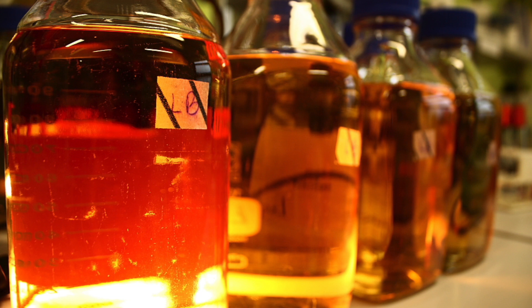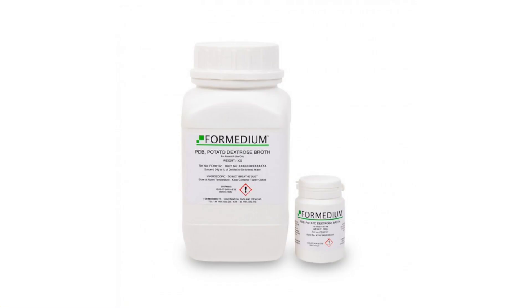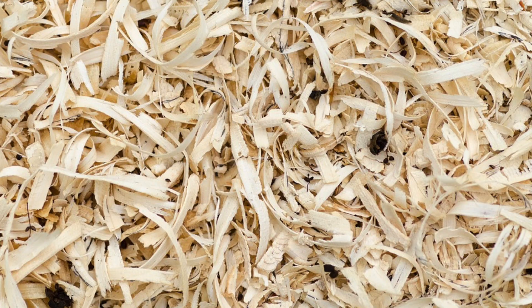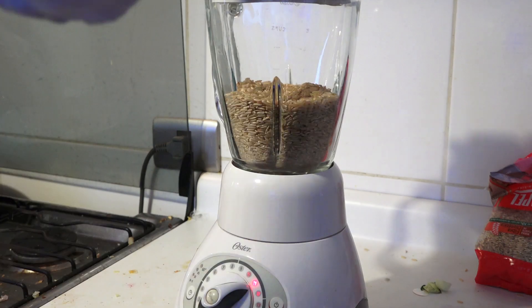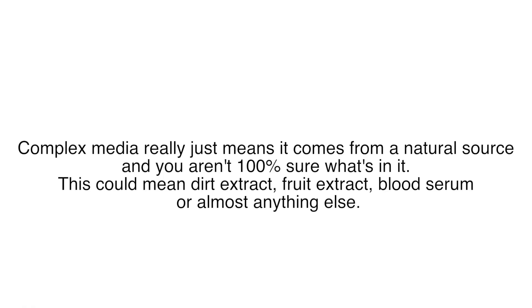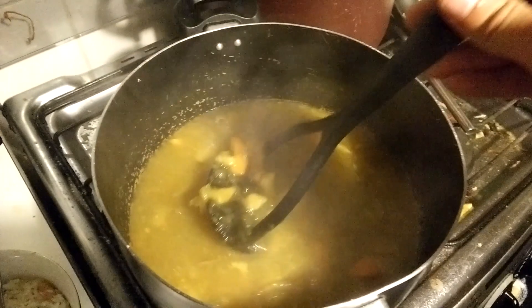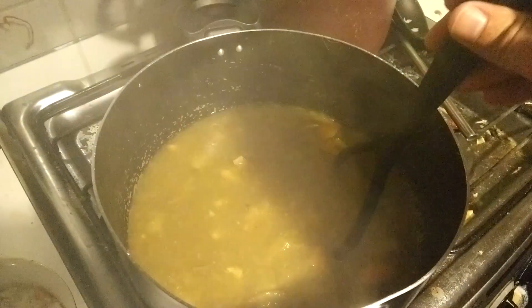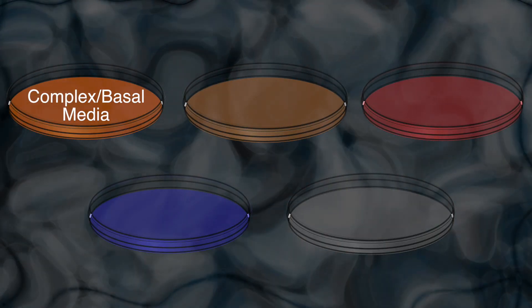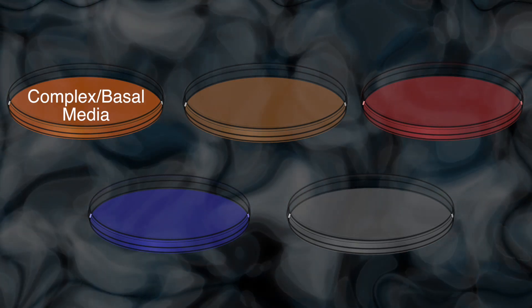LB isn't the only complex media and often isn't even the best choice. For example, if you're growing fungi you'll want something like potato dextrose broth, or sawdust, or brown rice depending on the species. There's a large assortment of complex media and often they can be made yourself by simply sourcing the ingredients and basically turning them into soup. But sometimes you want more control over what's in your media.